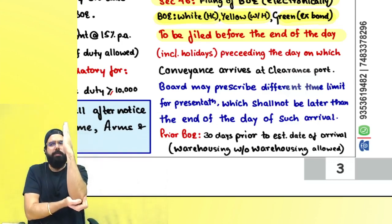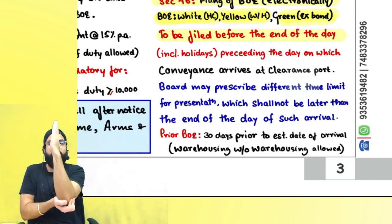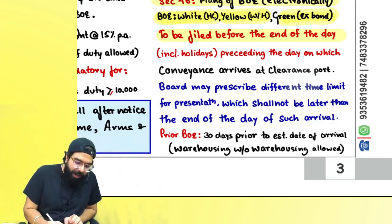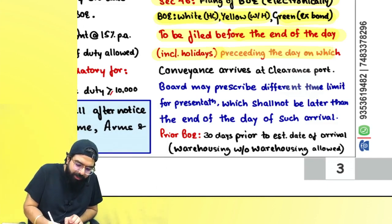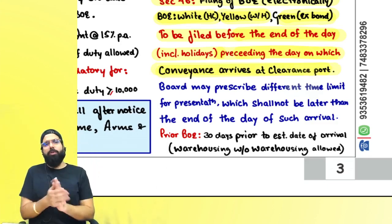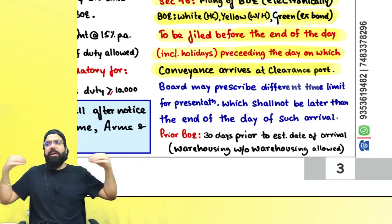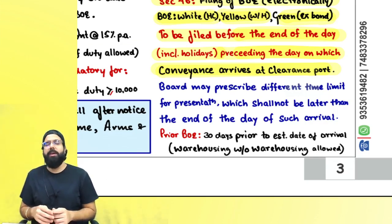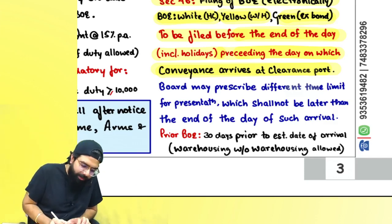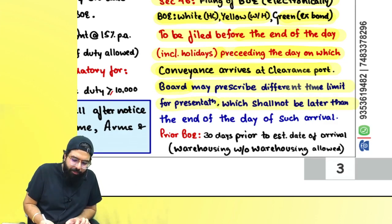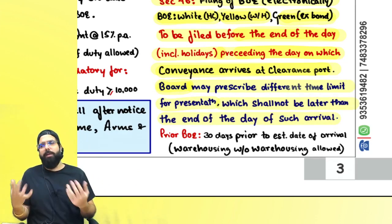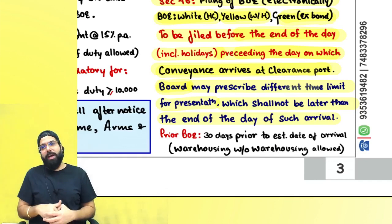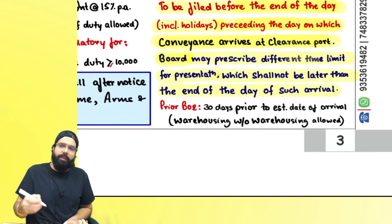For example, if your goods are coming to India on 16th August and 15th August is a holiday, your bill of entry should still be filed by 15th August. The bill of entry must be filed before the end of the day — including holidays — preceding the day on which the goods conveyance arrives at the clearance port. CBIC may prescribe a different time limit, but that cannot be later than the end of the day of arrival of the vessel.